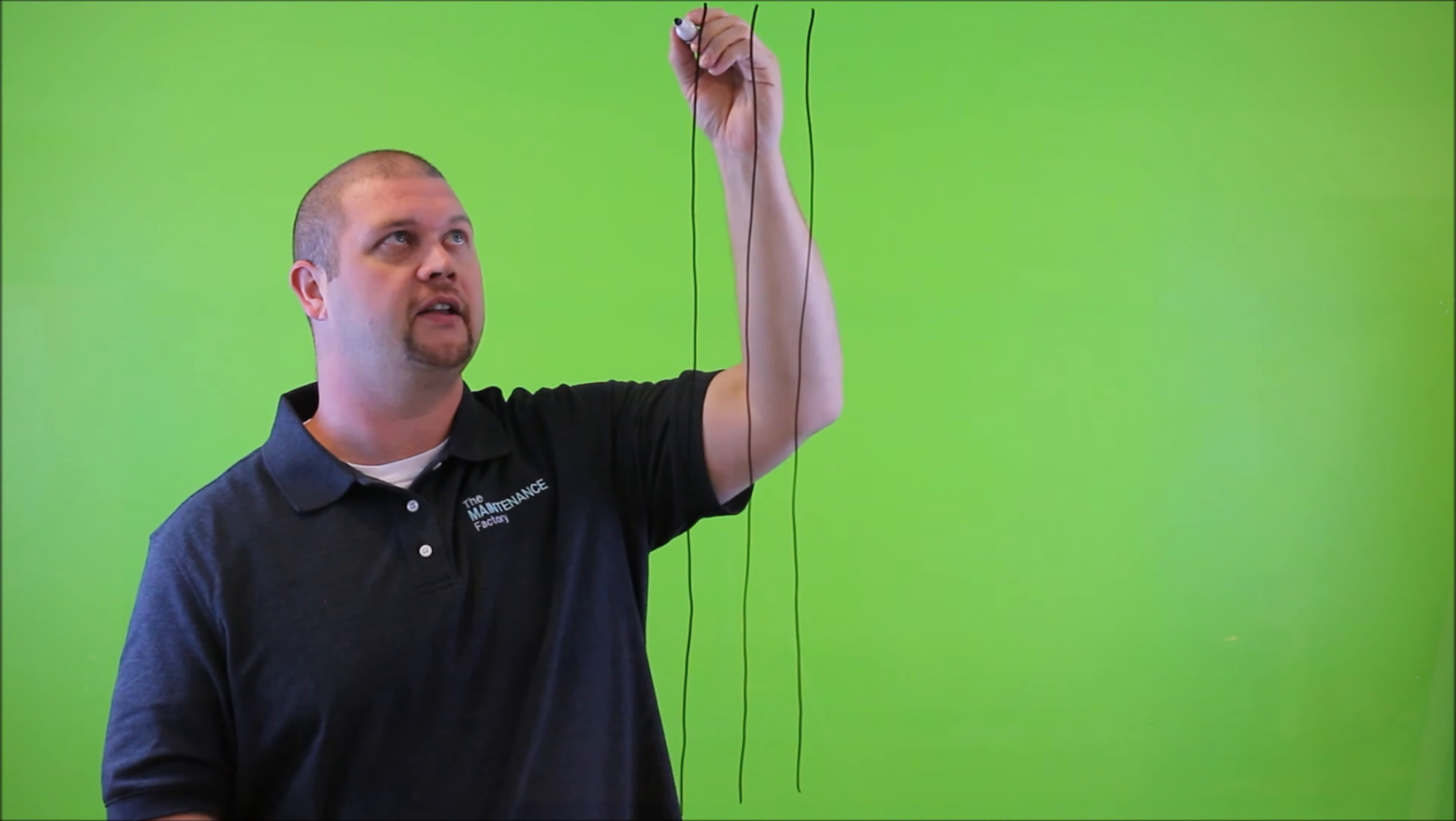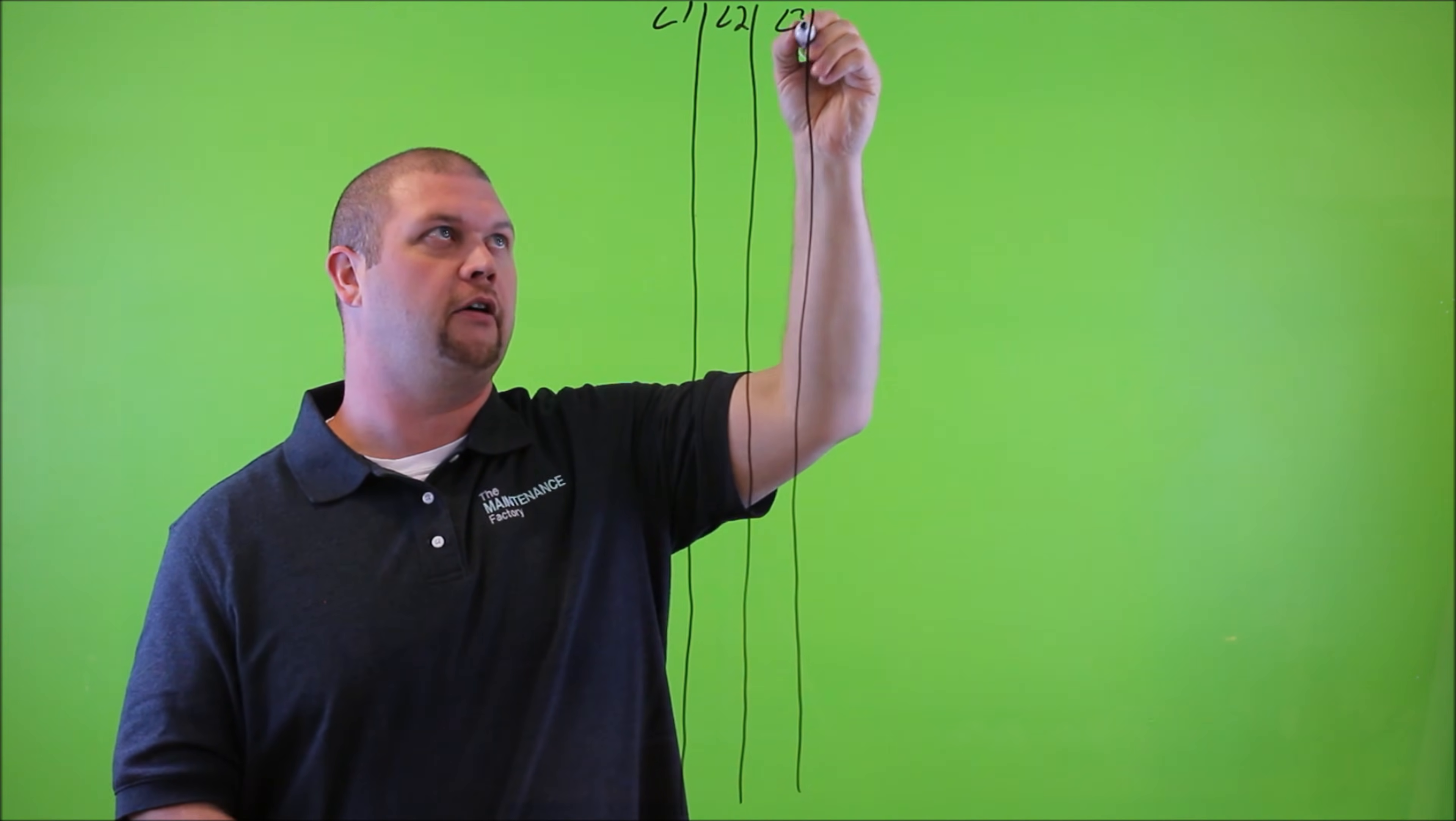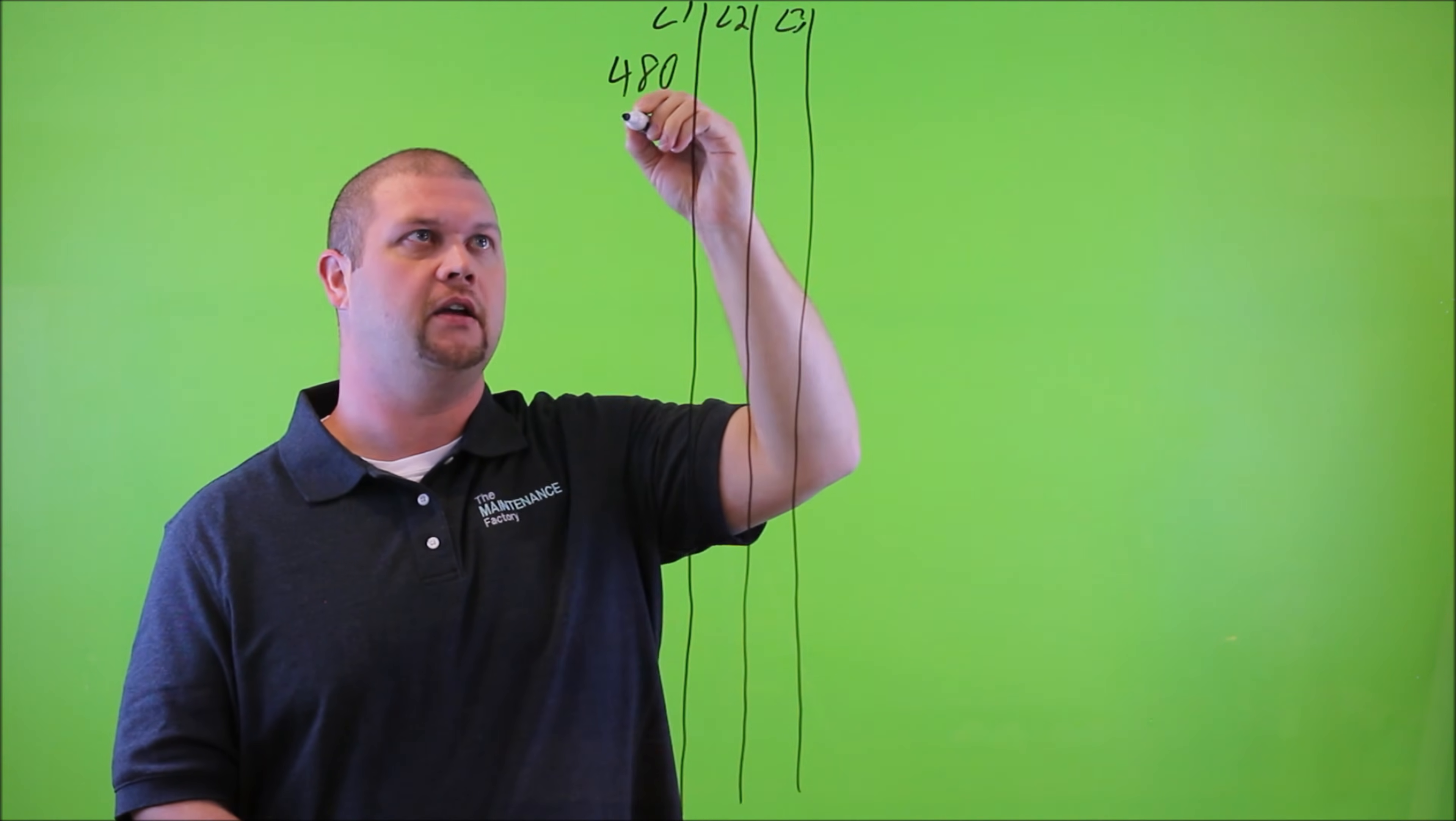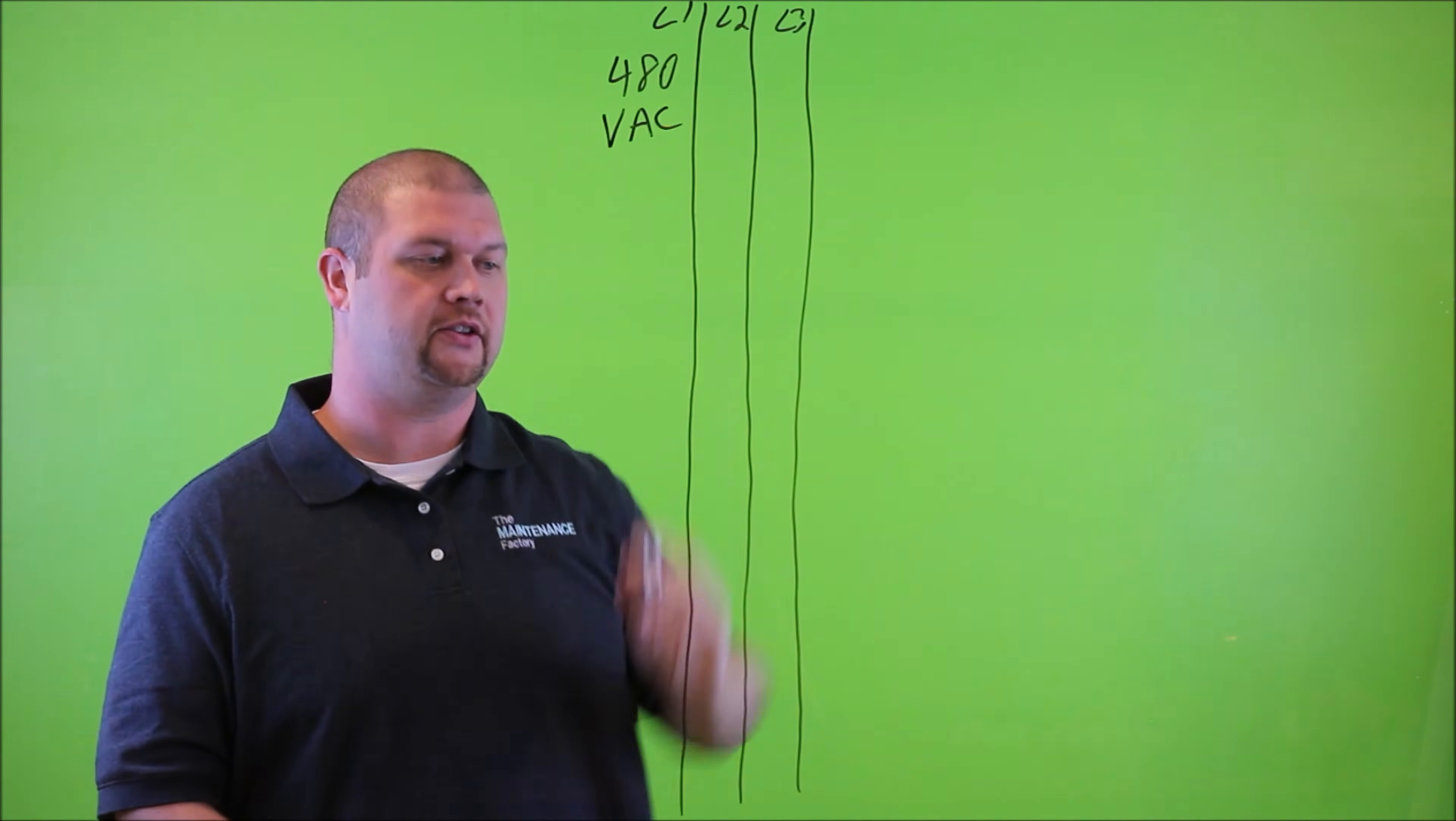So the first thing I want to do is draw out three phases of power. If you were to look at an electrical print or drawing, you'll probably more than likely see three vertical lines. They might be labeled L1, L2, and L3. And they'll probably have a note designating the power. In this case, it would be 480 volts AC.